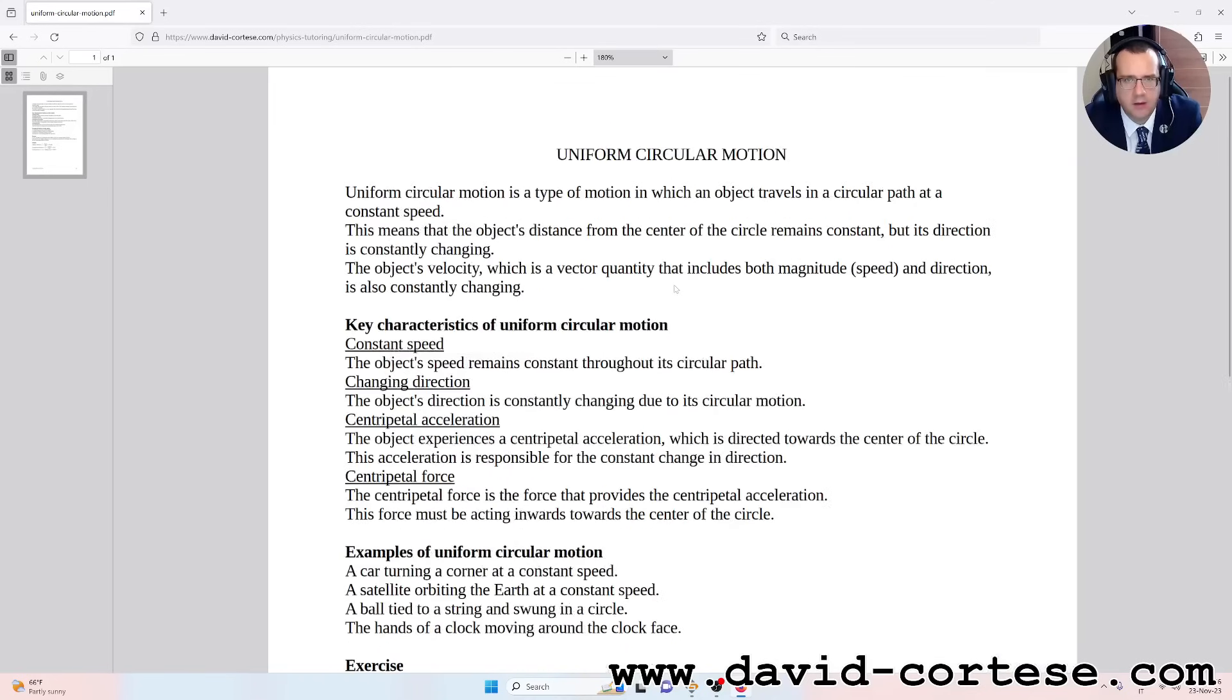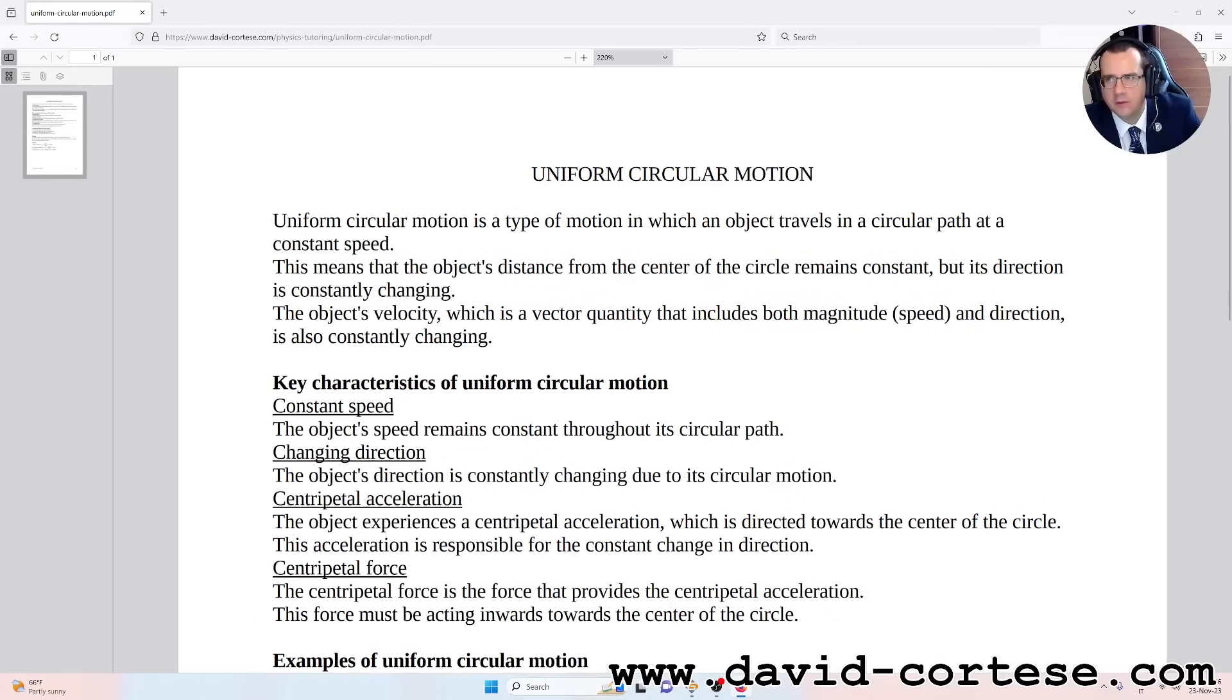Let's start. The uniform circular motion is a type of motion in which an object travels in a circular path at a constant speed. This means that the object's distance from the center of the circle remains constant, but its direction is constantly changing.